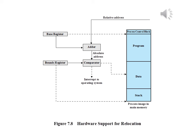The figure shows the way in which this address translation is typically accomplished. When a process is assigned to the running state, a special processor register, sometimes called the base register, is loaded with the starting address in main memory of the program. There is also a bounds register that indicates the ending location of the program. These values must be set when the program is loaded into memory or when the process image is swapped in. During the course of execution, relative addresses are encountered, including the contents of the instruction register, instruction addresses in branch and call instructions, and data addresses in load and store instructions.